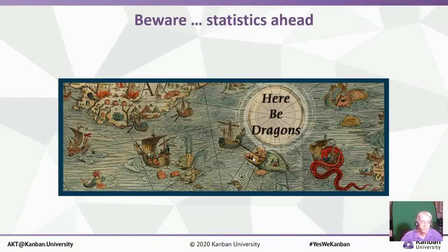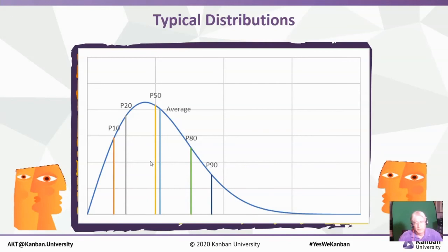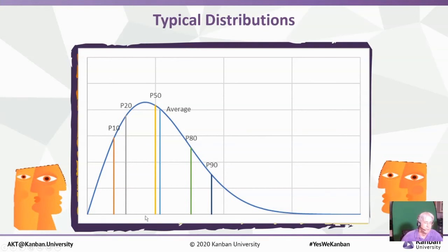Now we're going to go with just a little bit of statistics. The reality is that anything is a probability distribution. When we're looking at how long things are going to take, it's a probability distribution. This is a fairly typical distribution curve shown for reference. When looking at complex work, they tend to be skewed a little bit to the right. You'll see numbers like P10 and P90 — what does that mean?